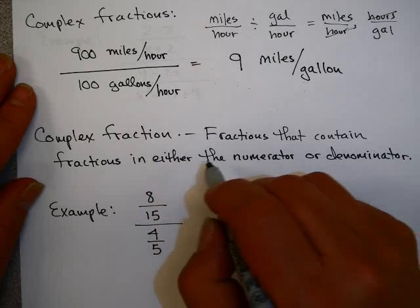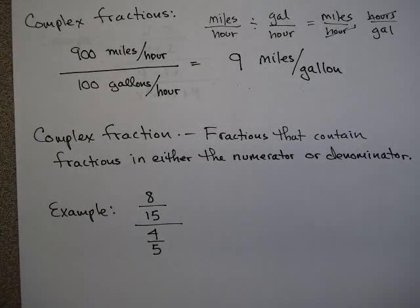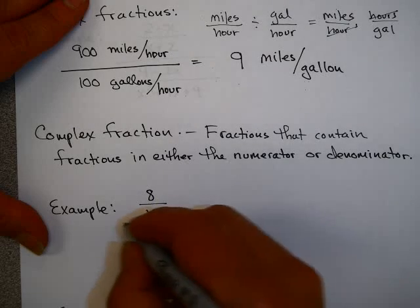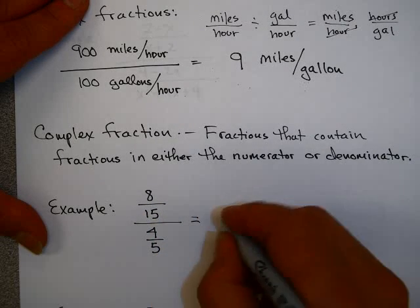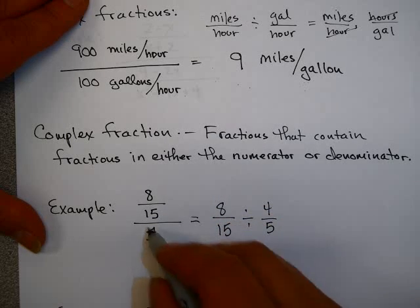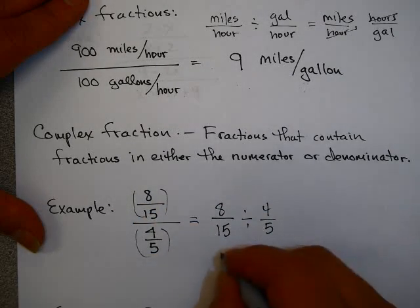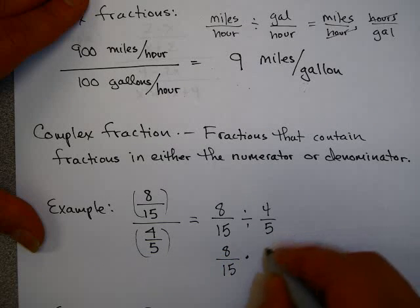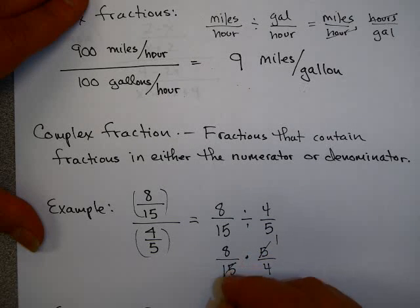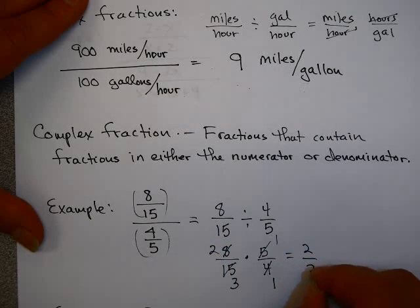This is an example of what we call a complex fraction — fractions that contain fractions in either the numerator or denominator or both. There are various ways to do this; we're going to look at one way in this section. Take 8 fifteenths over 4 fifths: write that as 8 fifteenths divided by 4 fifths. Change division to multiplication by the reciprocal, divide out common factors, and you end up with two-thirds as your answer.